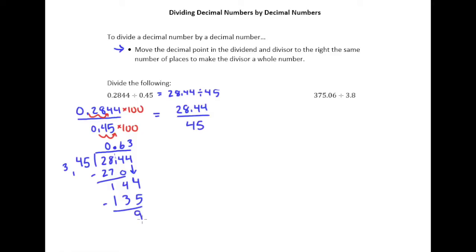So here I have a remainder of 9. And remember our rule, once we get to the point where there's no more digits to drop down, if there's a remainder, add a 0 and drop it down. 45 goes into 90, that happens exactly twice. So 2 times 45 is 90. And now we finally have that remainder of 0. So our answer here is 0.632, or 632 thousandths.